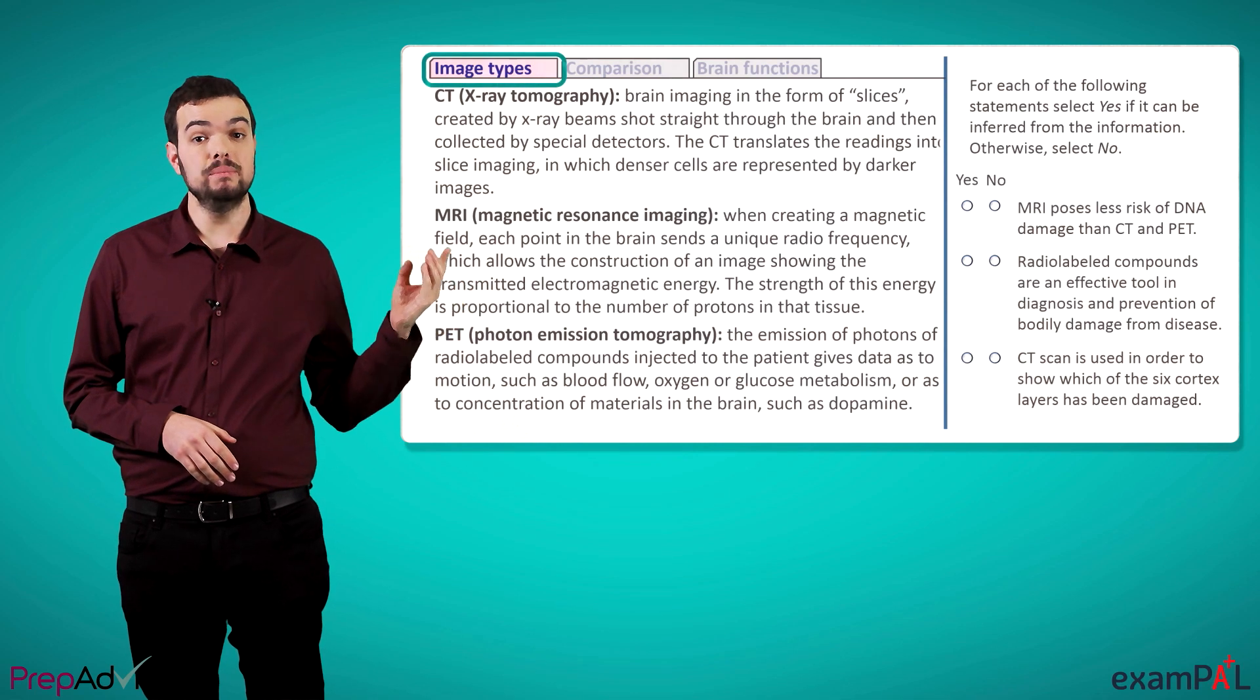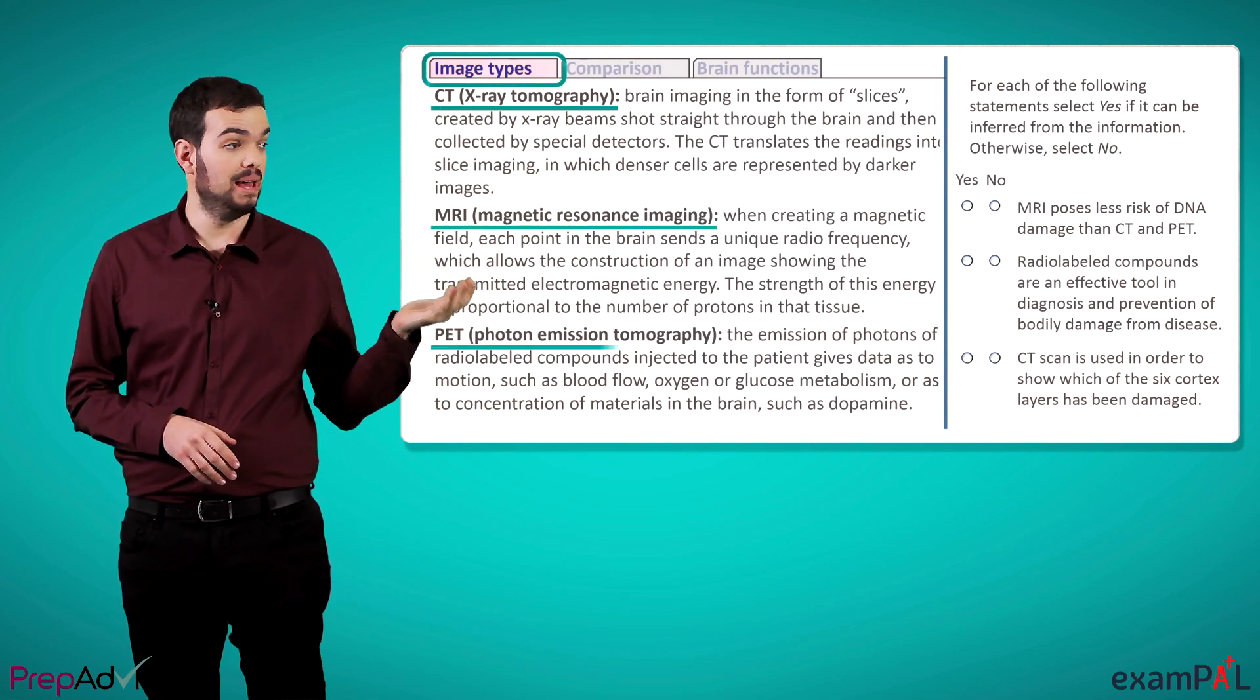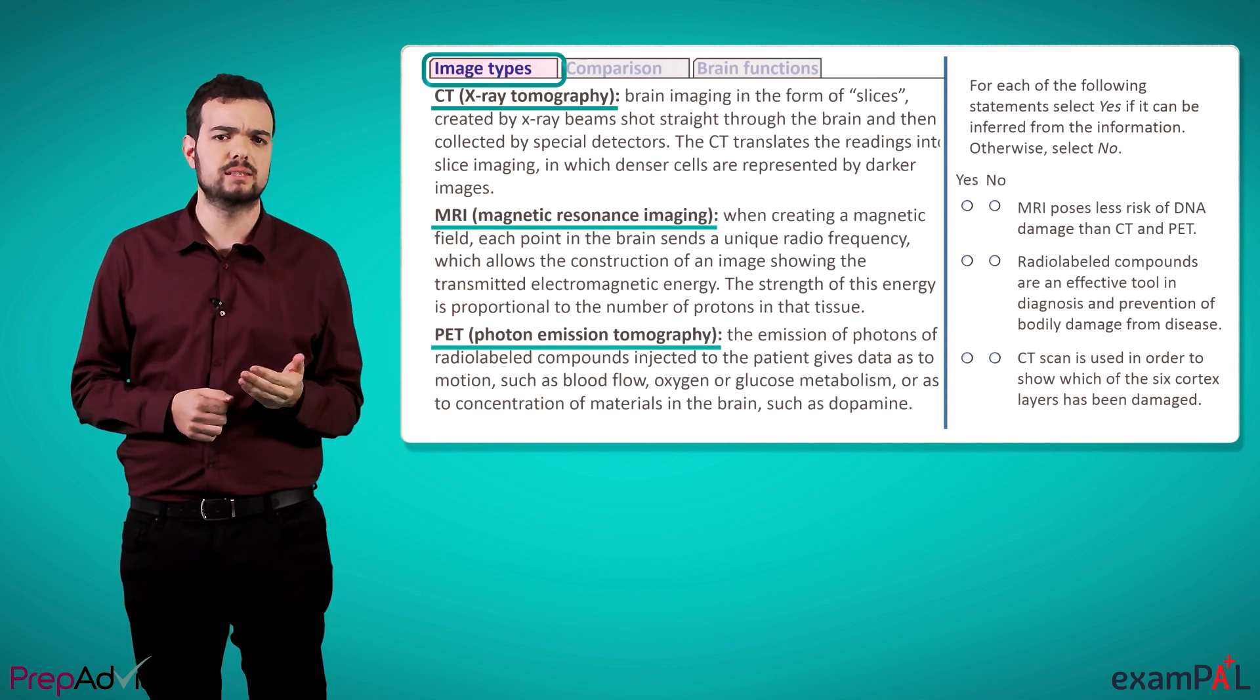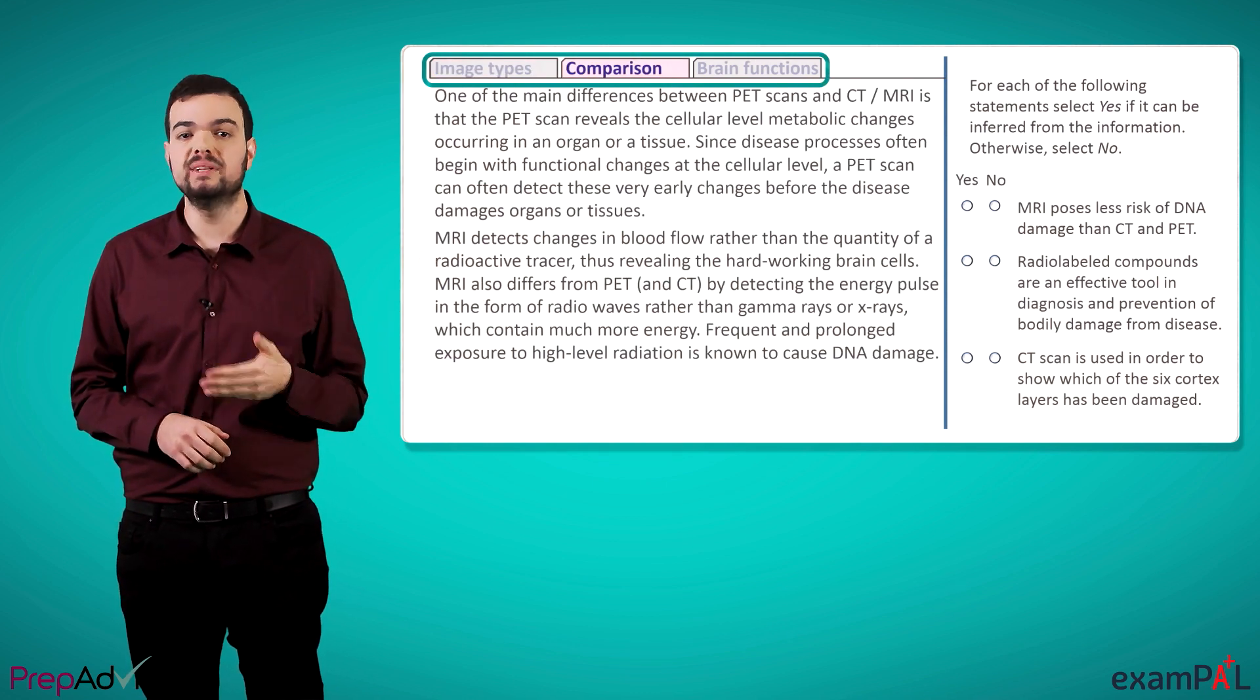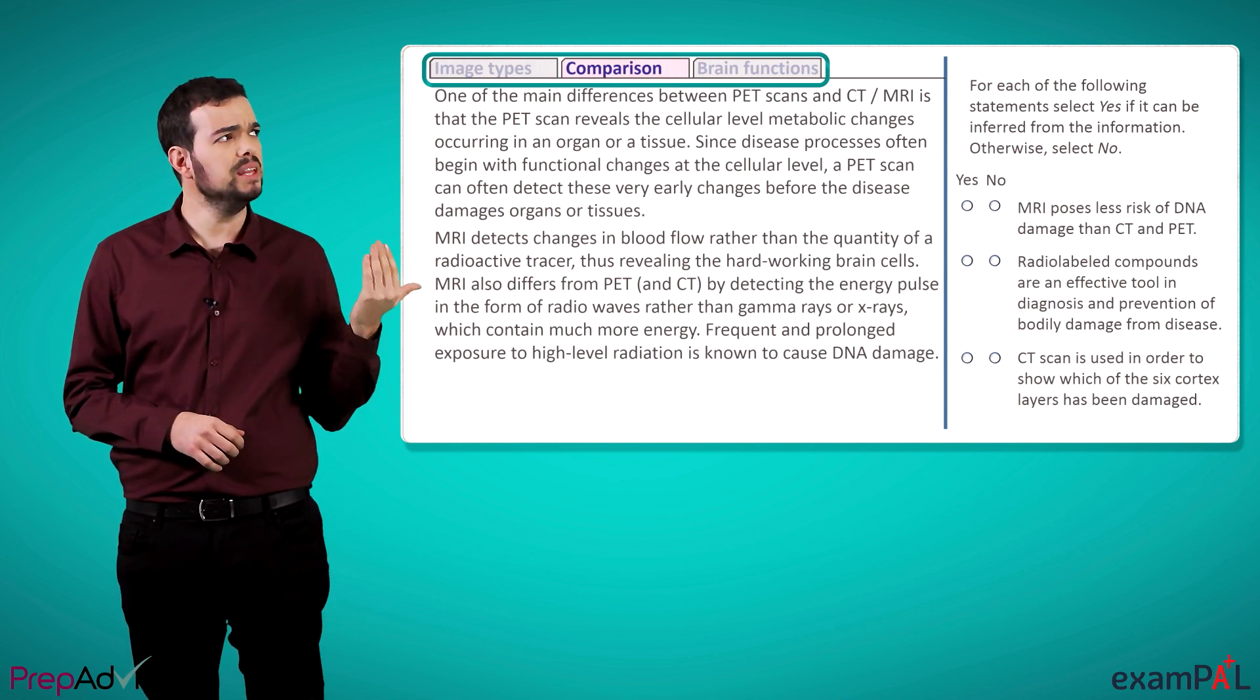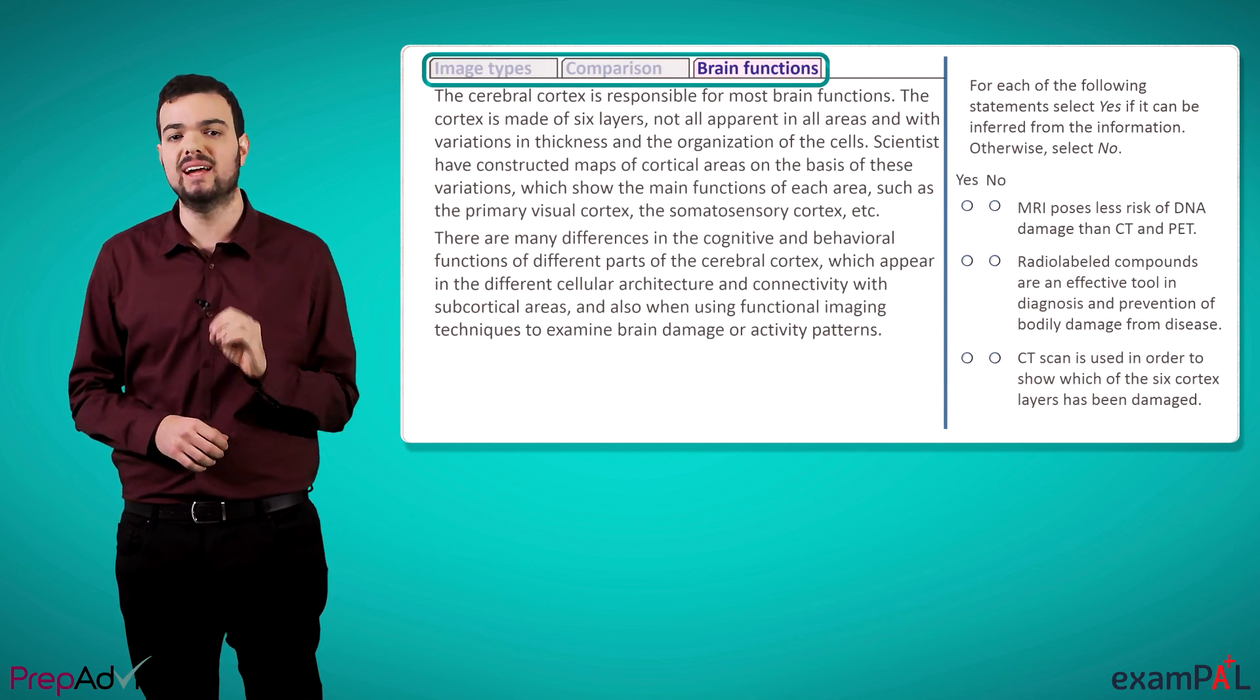In this specific case, the tab that is already open is Image Types, and the titles are CT, MRI, and PET. These are explanations of various types of imaging techniques used in science or medicine. Then we have two other tabs. One is called Comparison, so we can assume we'll compare the different techniques in some way. And the other is something about brain functions. We'll see what exactly once we start answering our questions.